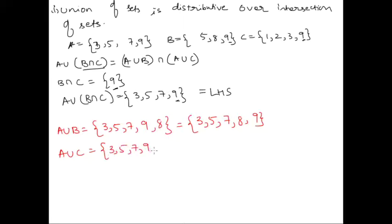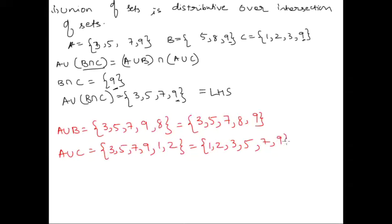Now what is A union C? We start with A: {3, 5, 7, 9}, then list out C without repeating anything. From C = {1, 2, 3, 9}, the elements 3 and 9 are repeated so we leave those. In ascending order: A union C = {1, 2, 3, 5, 7, 9}. Now we need to find the intersection of these two sets.